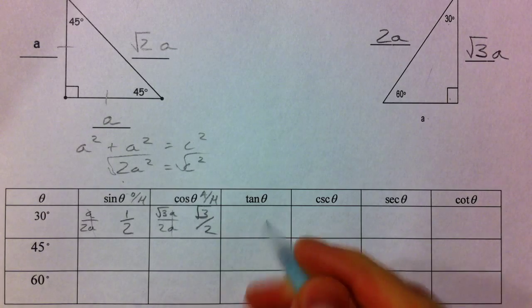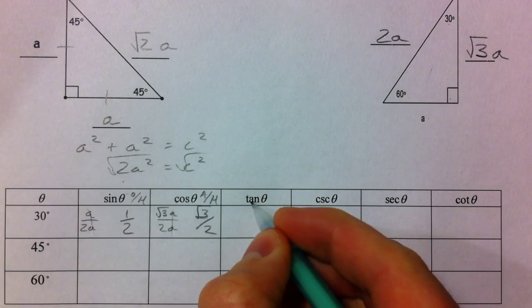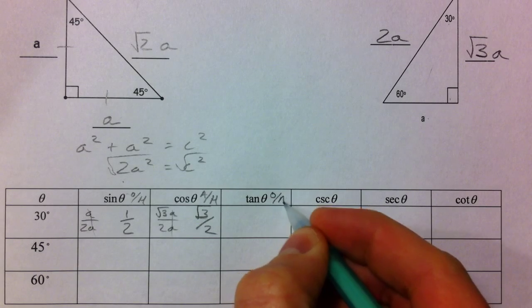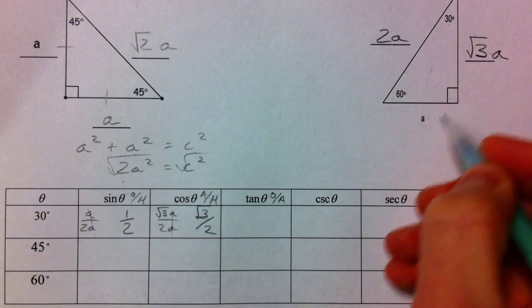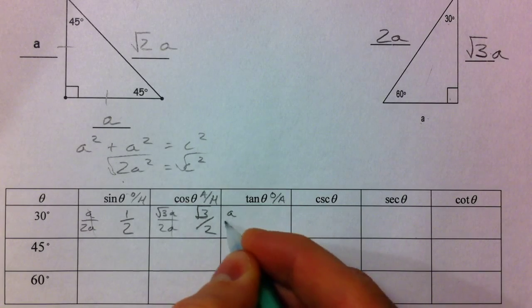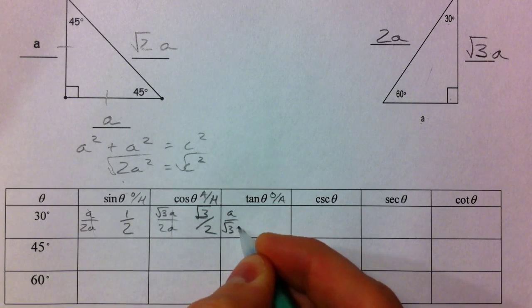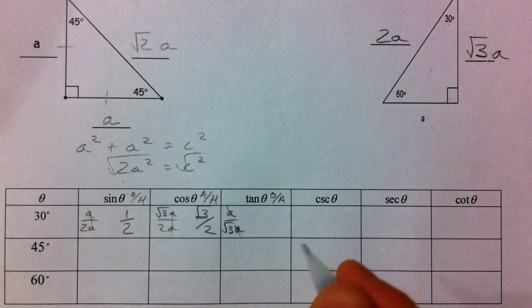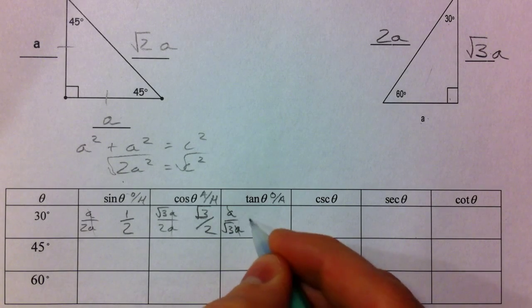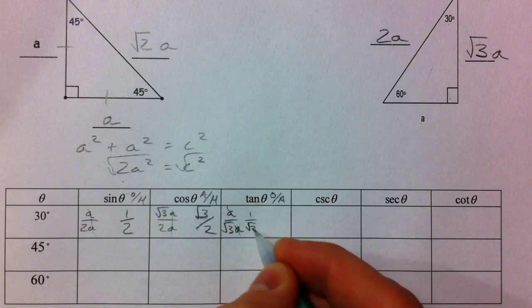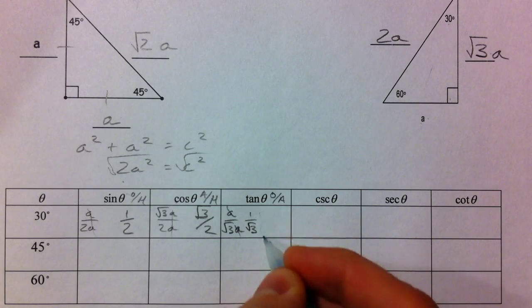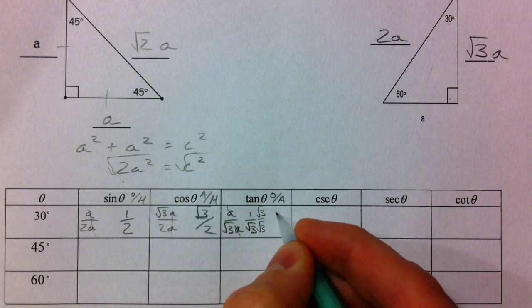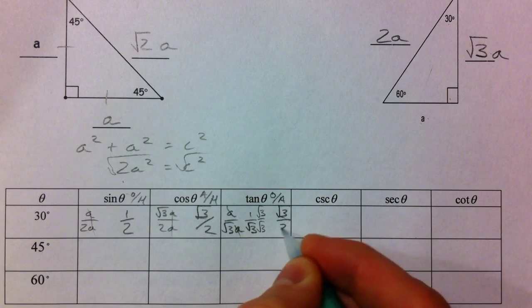And that's the ratio between the two sides. Tangent. Toa. Tangent. Opposite over adjacent. Opposite over adjacent. Opposite A over root 3 A. The A's cancel out. You get 1 over the square root of 3. Which we can rationalize. Multiply by root 3 over root 3. And you get the square root of 3 over 3.